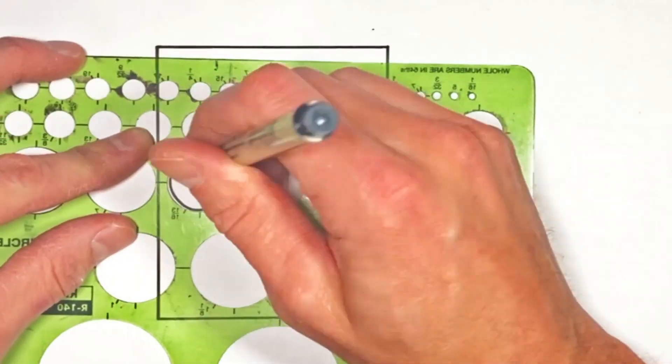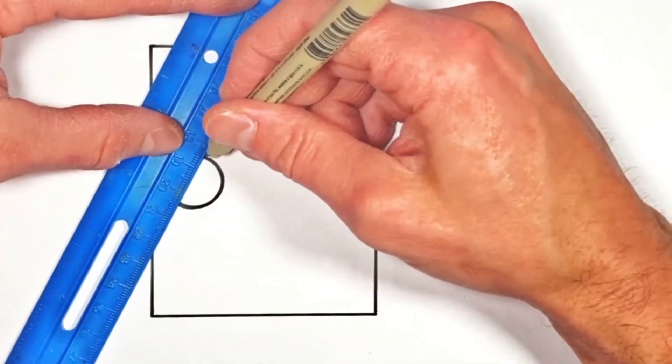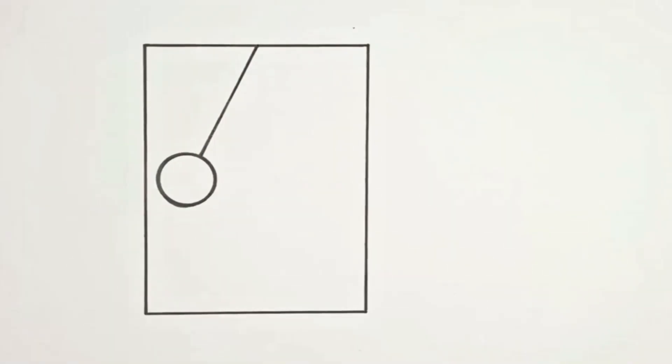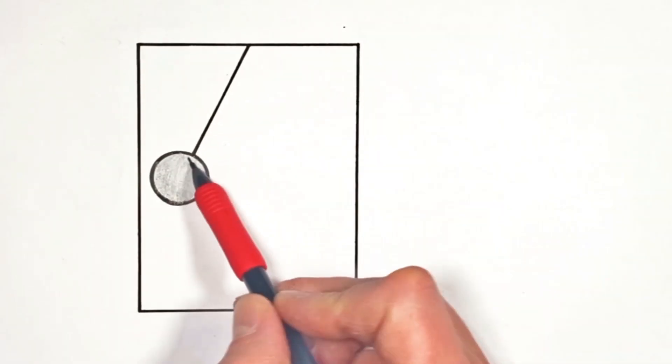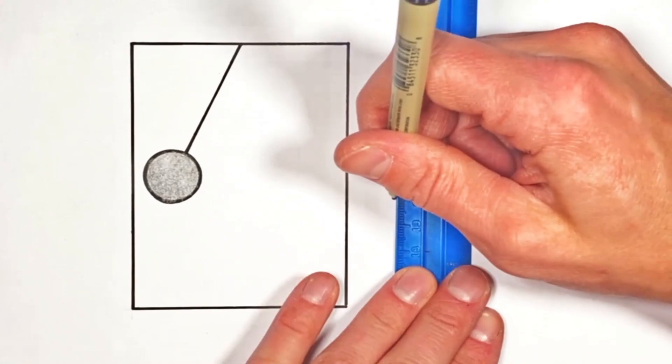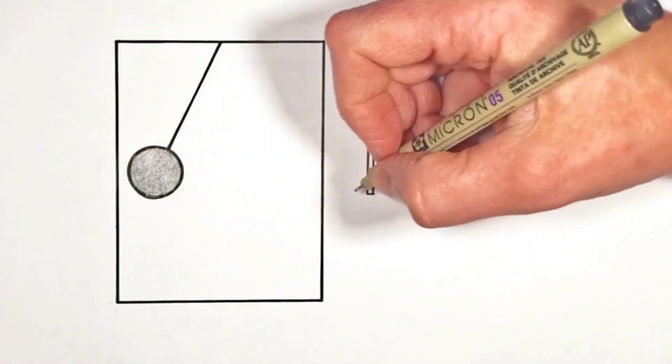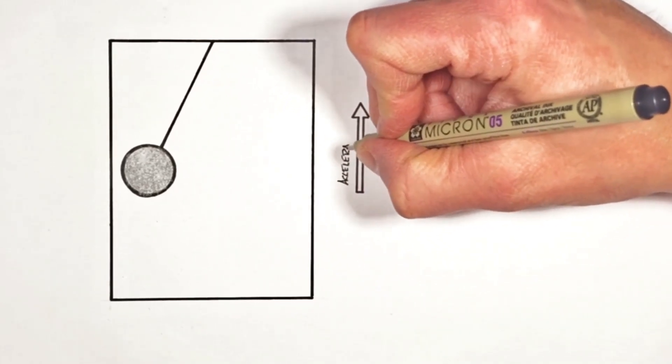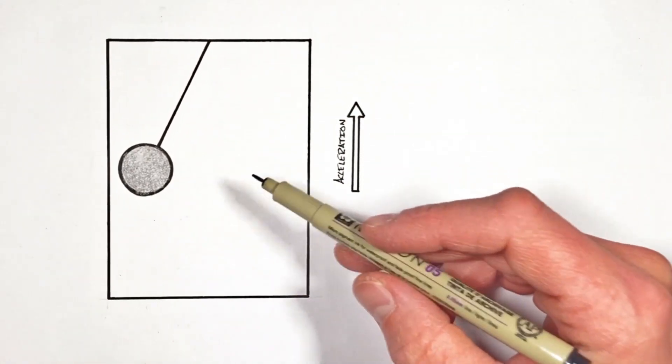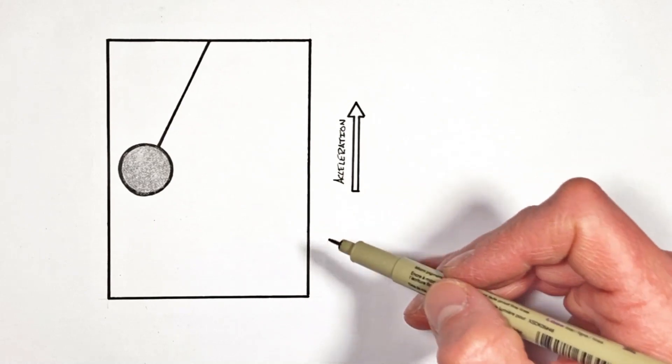Today we're going to take a look at the curious case of a pendulum which is in an elevator, and I'm going to explain how to calculate the period of that pendulum. Now I'm going to work this problem as though the elevator is accelerating upwards, but the reality is this solution will work whether the elevator is accelerating up or down. This problem typically shows up in introductory high school physics courses.